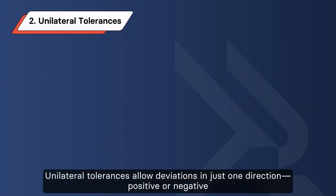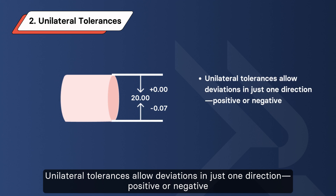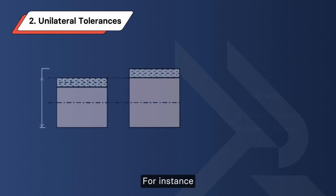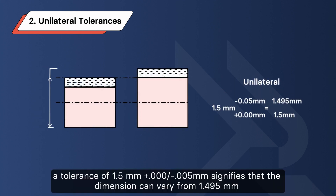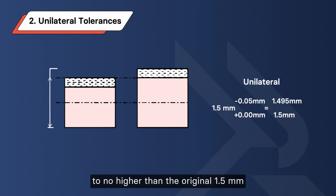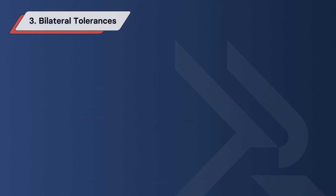Second: Unilateral tolerances. Unilateral tolerances allow deviations in just one direction — positive or negative. For instance, a tolerance of 1.5 mm plus 0 or minus 0.005 mm signifies that the dimension can vary from 1.495 mm to no higher than the original 1.5 mm.